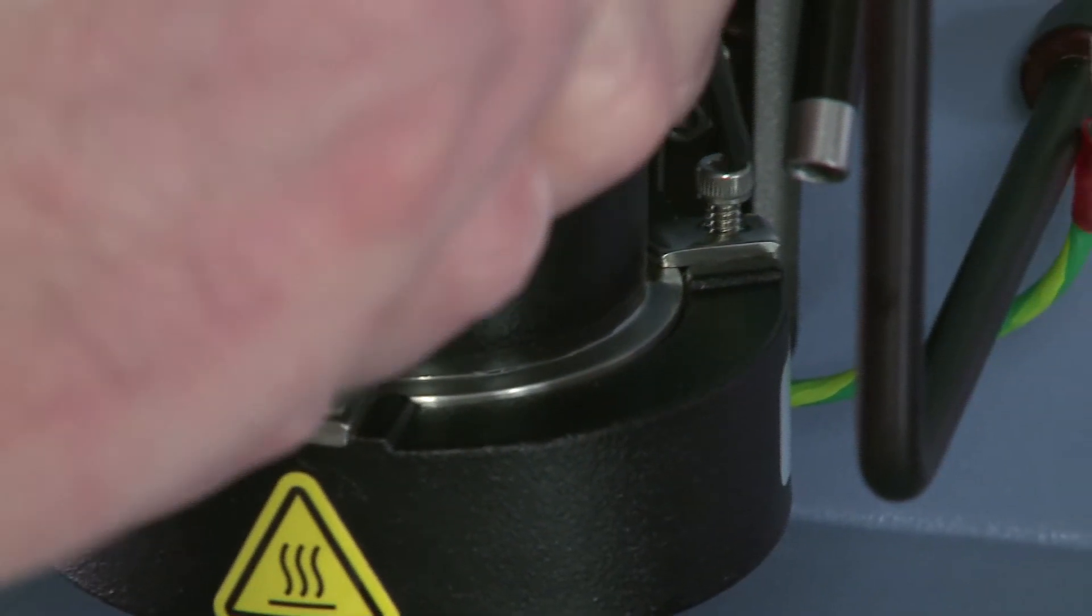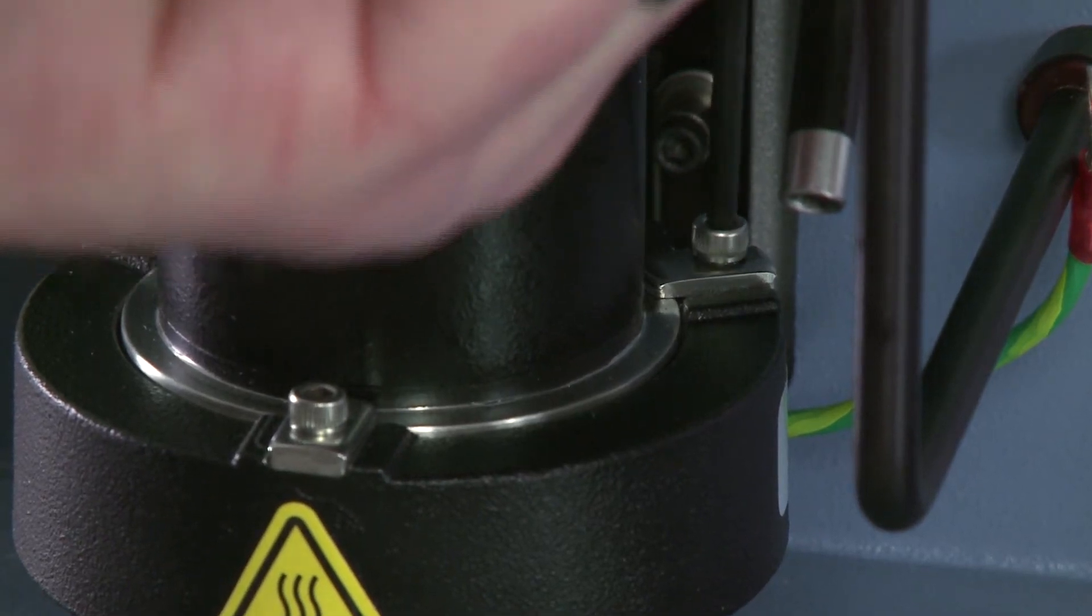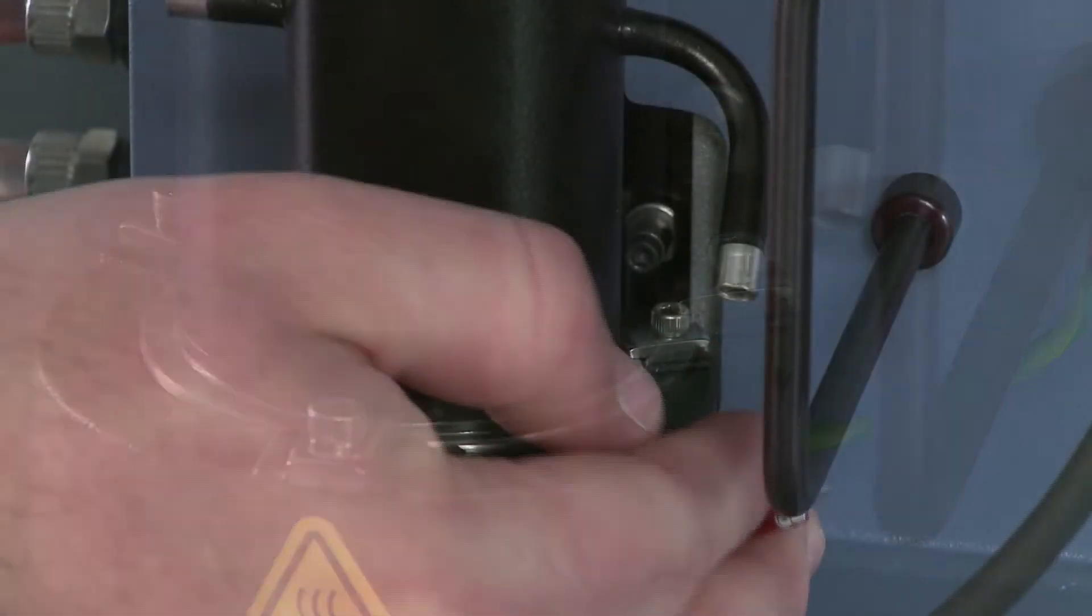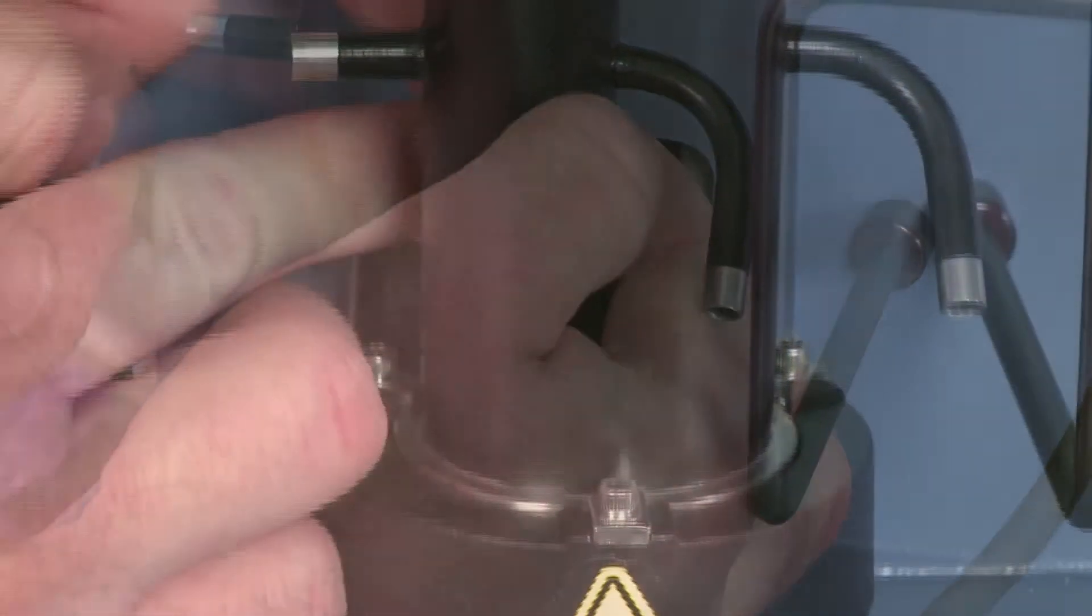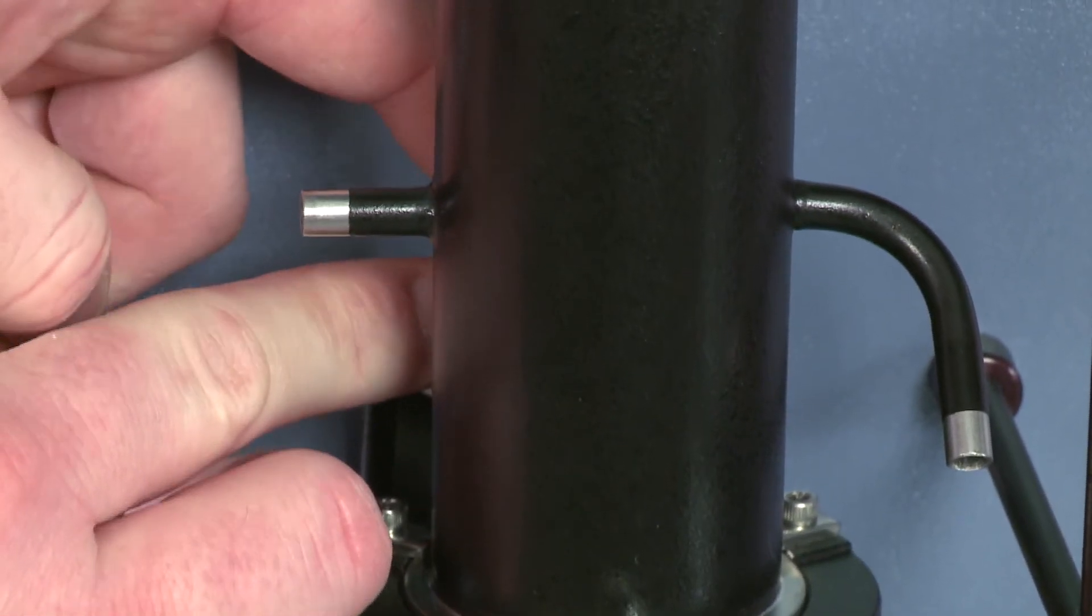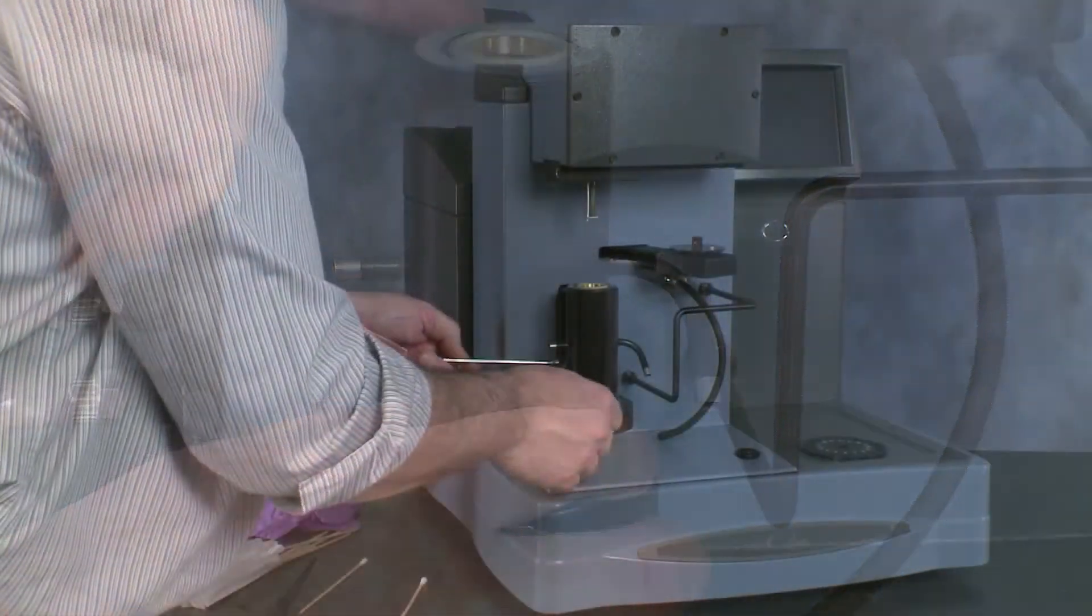Once back in place, we can tighten up the clips fully using the Allen key, replace the earth bonding cable, and replace the nut on the earth bonding cable, which we then tighten up.